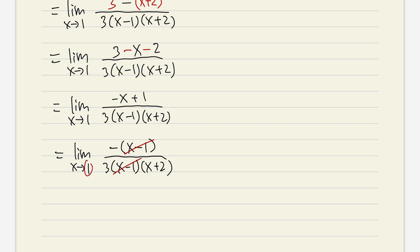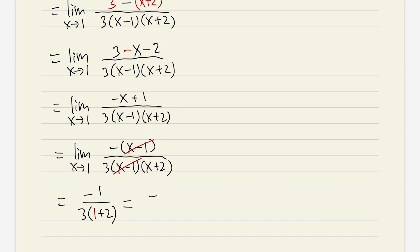Finally, we plug 1 into the remaining x. On the top we have negative 1. On the bottom we have 3 times (1 plus 2), which is 3 times 3 equals 9. The final answer is negative 1 over 9.